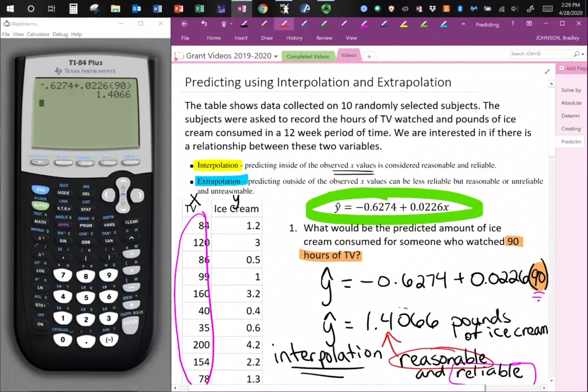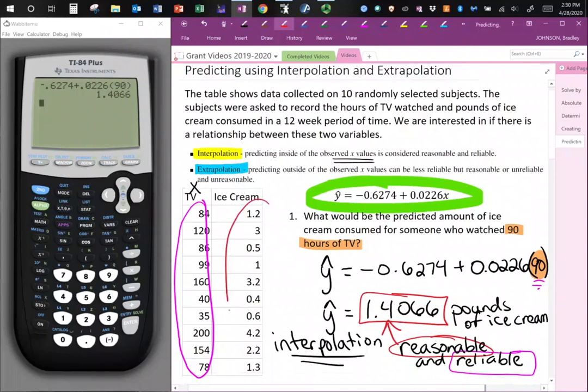Now reasonability is reasonable. We look at our y value. Now is 1.4 pounds of ice cream reasonable? If you look at this column, 1.4 is reasonable. So it's a reasonable solution. So we would call that reasonable and a reliable solution. And that comes from interpolation, predicting within the observed x values.